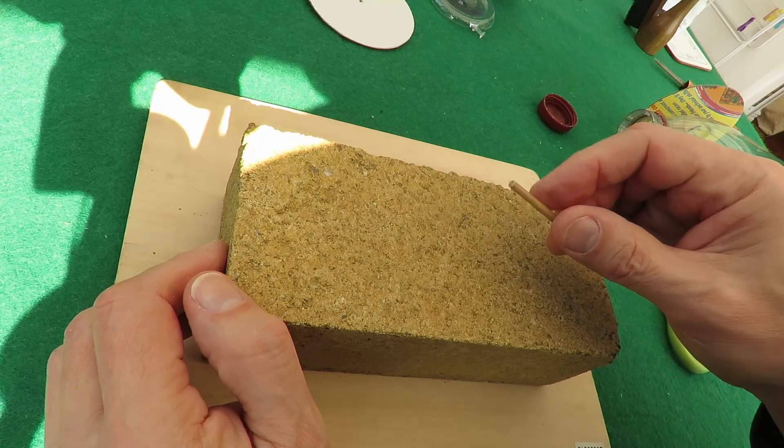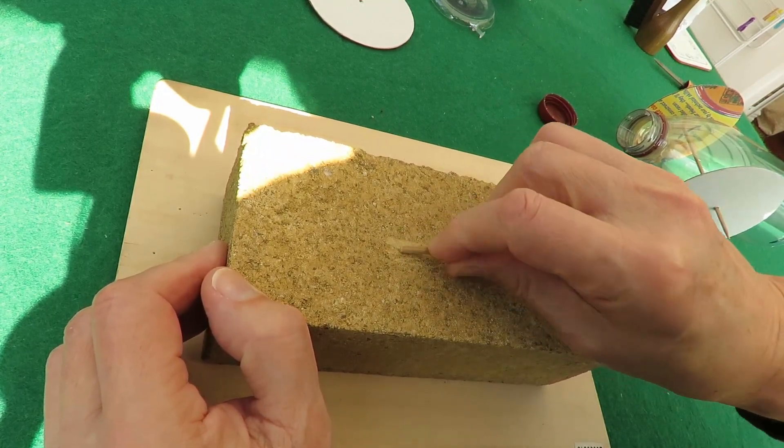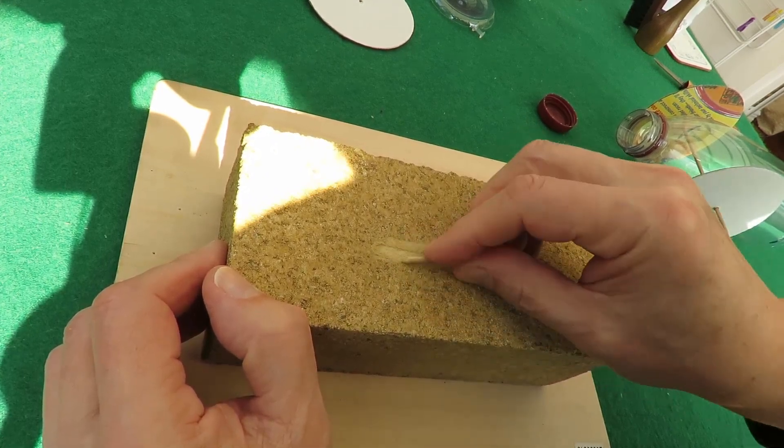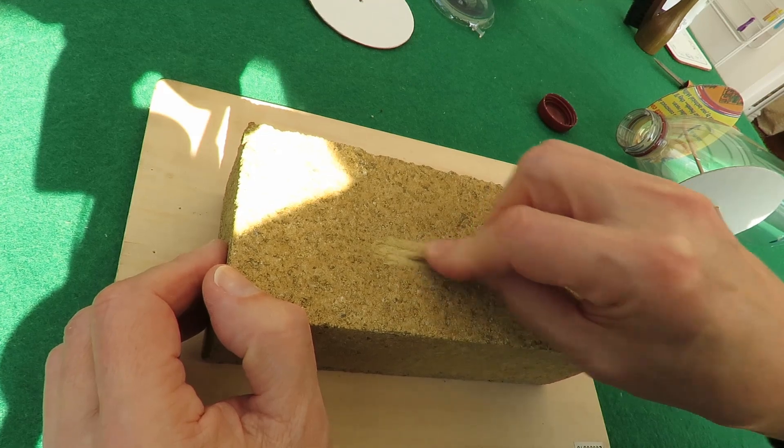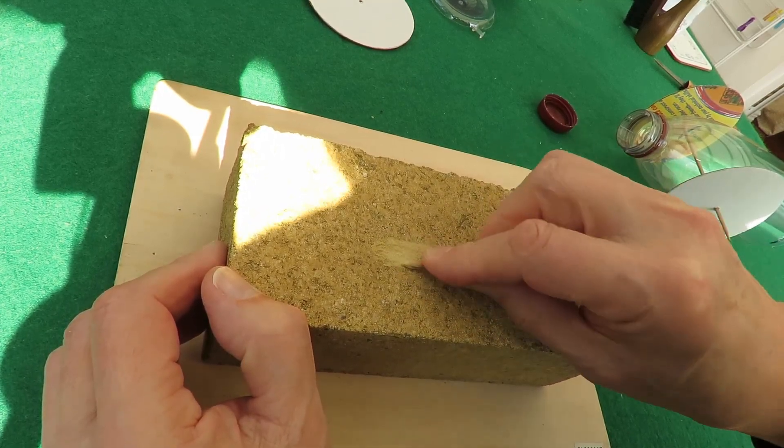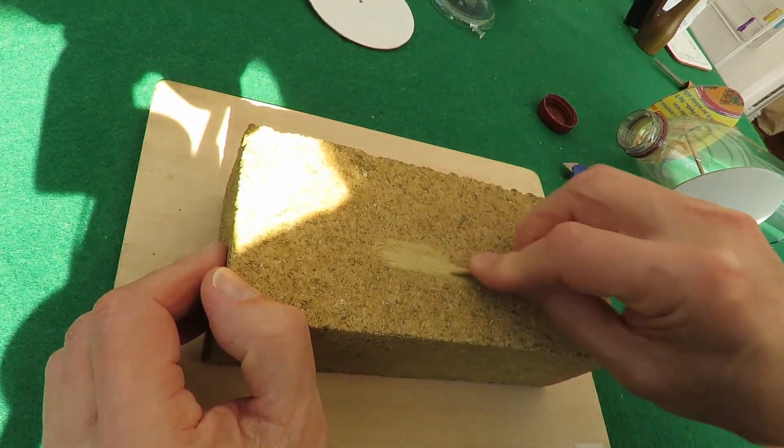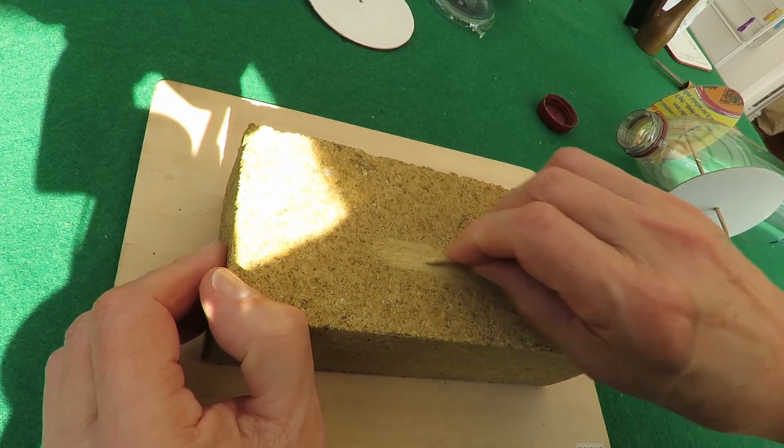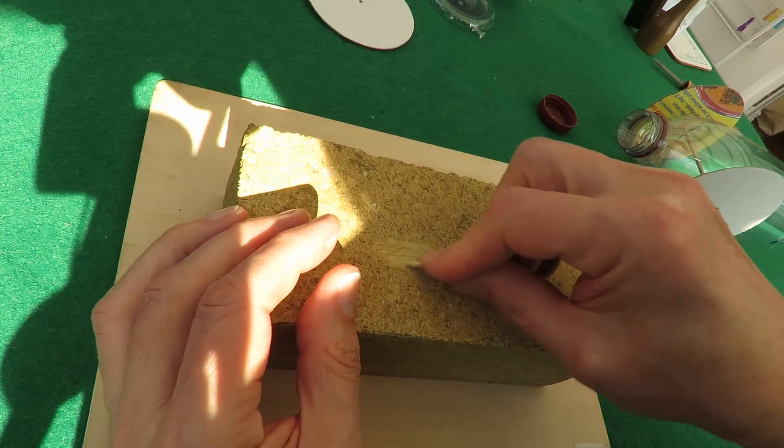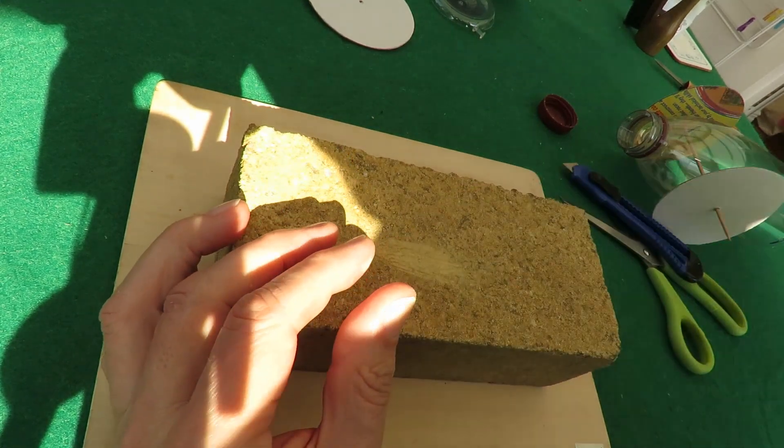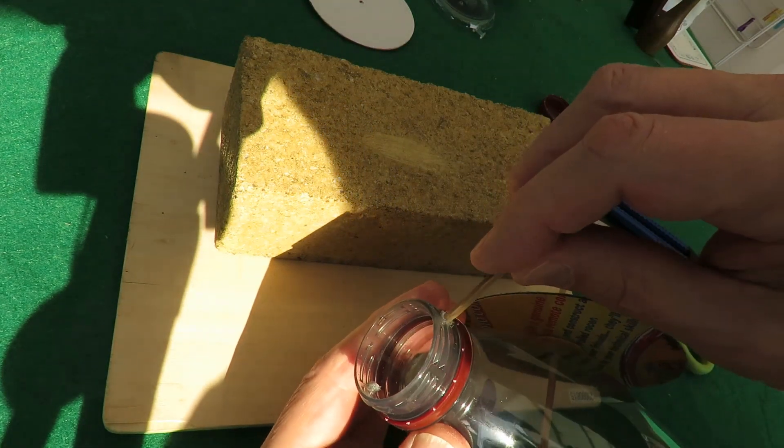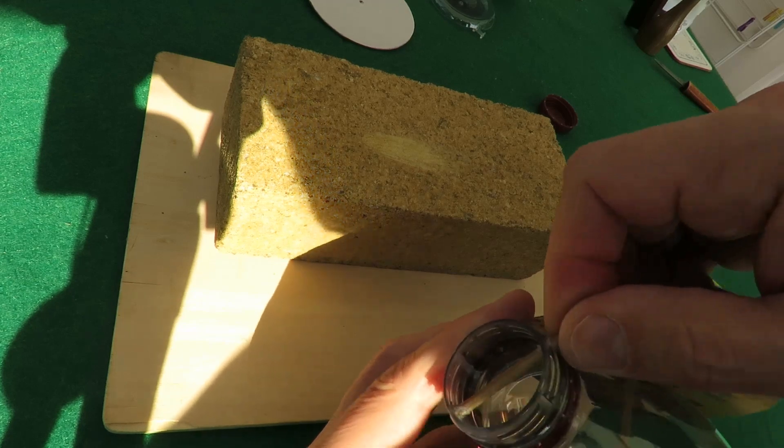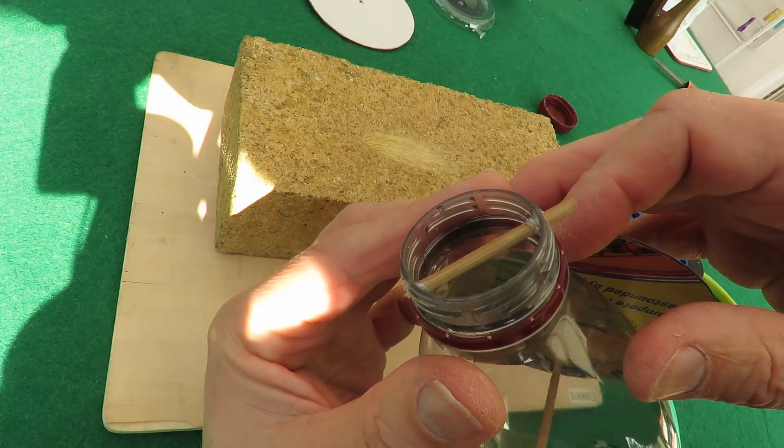So here we are, an ordinary house brick. You can use that like sandpaper. If you go outside and do this on the wall of your house you'll probably get in trouble because it's going to leave a mark on the brick. There we are, we've got a bit of a point. Doesn't need to be perfect, it just makes it easier to push it through. And that's how we're going to attach the rubber band at that end.